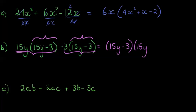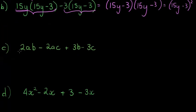What remains after taking out (15y − 3) is 15y as the first term and negative 3 as the second term. We actually have the reverse of distributing two binomials. Another way of writing this is (15y − 3) squared, because we're multiplying the same factor by itself.